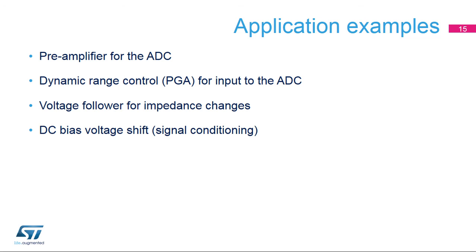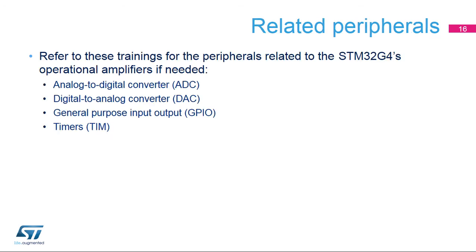Its high slew rate can drive the sample capacitor of the ADC very effectively. It is also handy to use as an on-chip voltage follower instead of an off-chip stand-alone op-amp. This is a list of peripherals related to the operational amplifiers — please refer to these peripheral trainings for more information if needed.